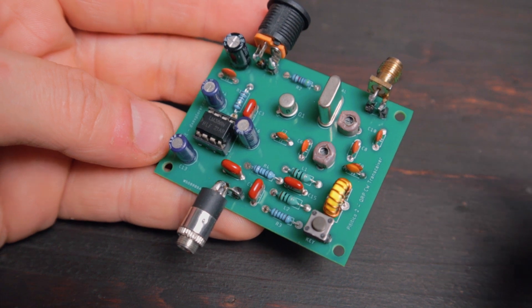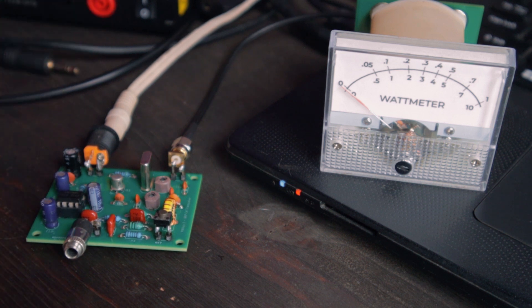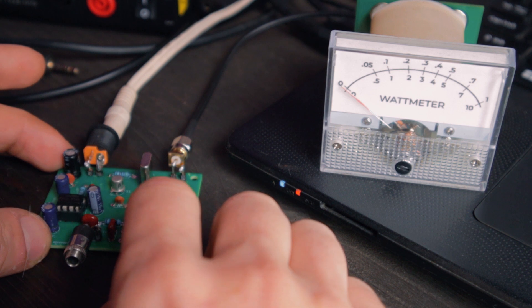All right, so I'm powering the PTT Co with 12 volts from the power supply that I have right here and I connected the RF meter and/or dummy load. I'm going to transmit really quick to see the power output.